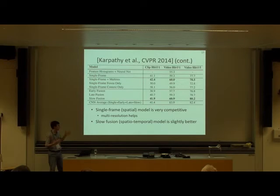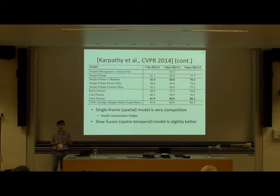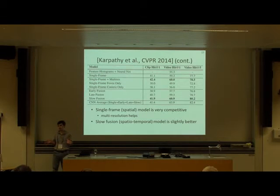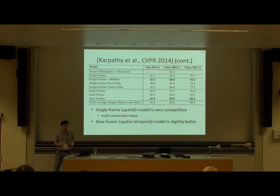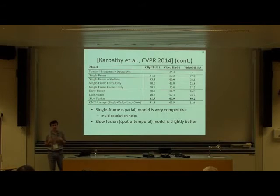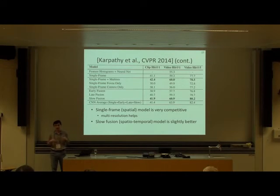What's interesting is that the single-frame network, which is basically an image classification network applied to a number of frames, performs very well. The best configuration — a slow fusion spatial-temporal network — performs only a little bit better. There could be several reasons: it could be the dataset, or it could be that a convolutional network tries to pick up spatial features rather than temporal features — an issue of the learning procedure.